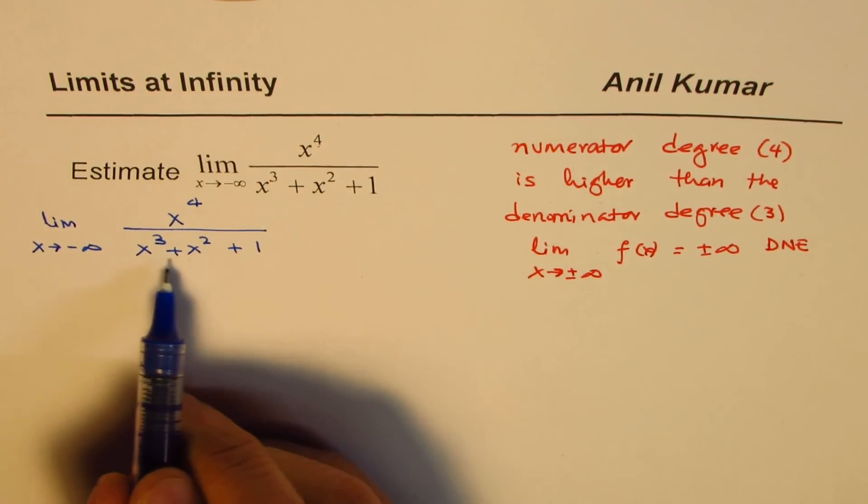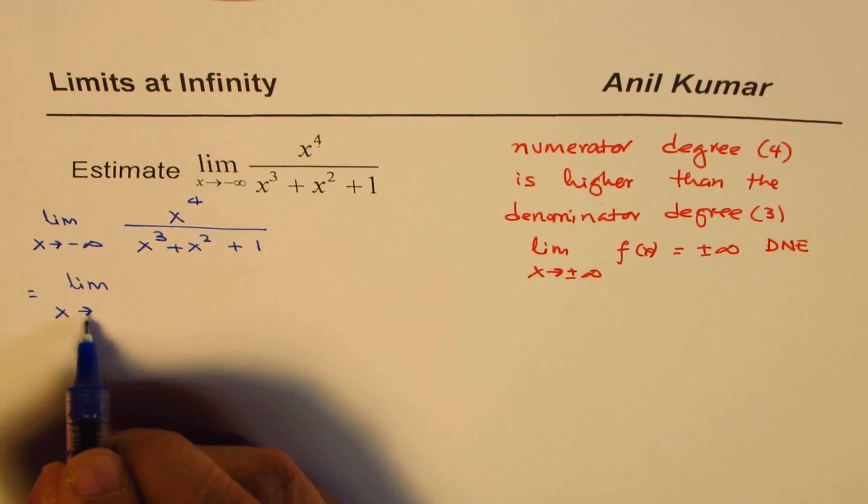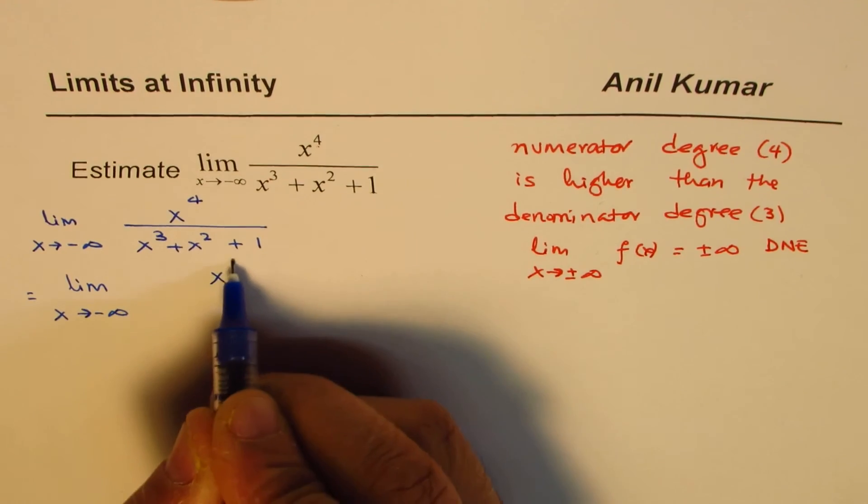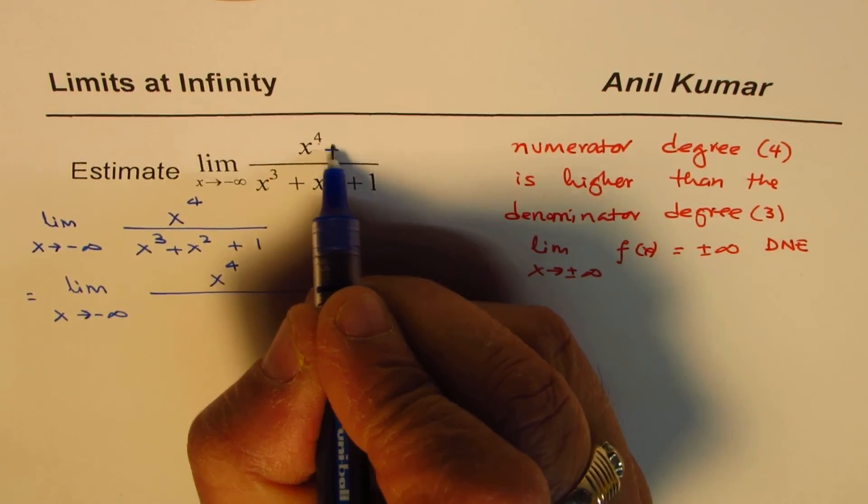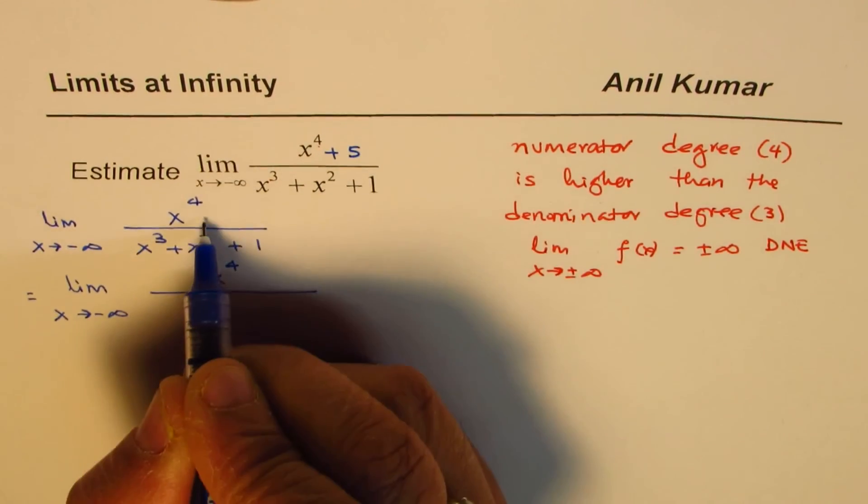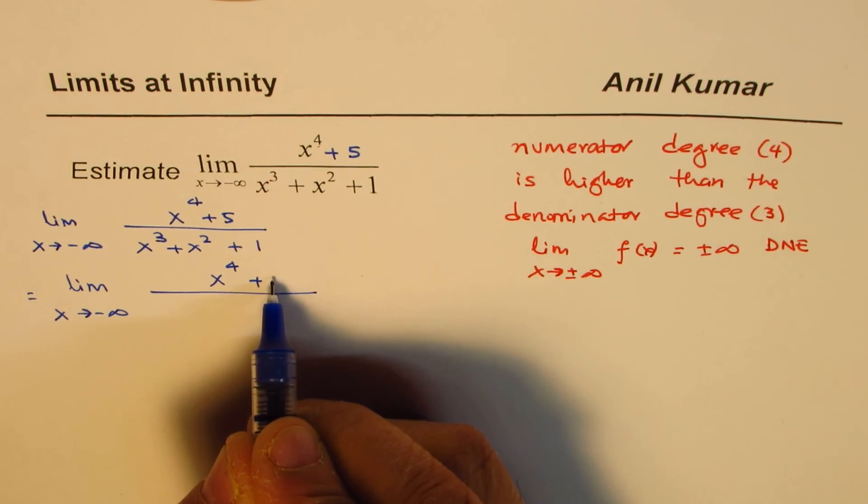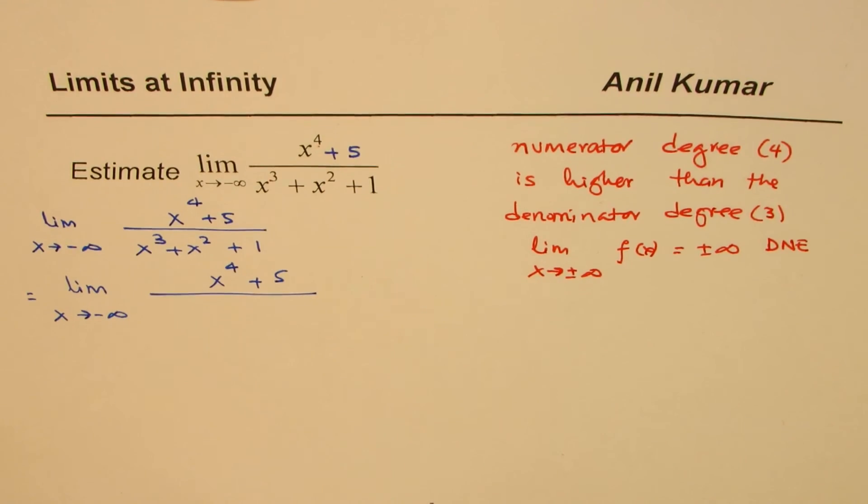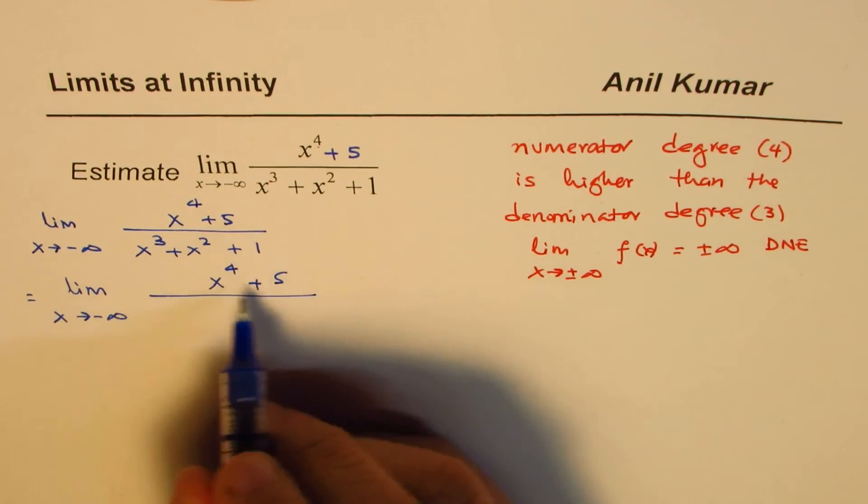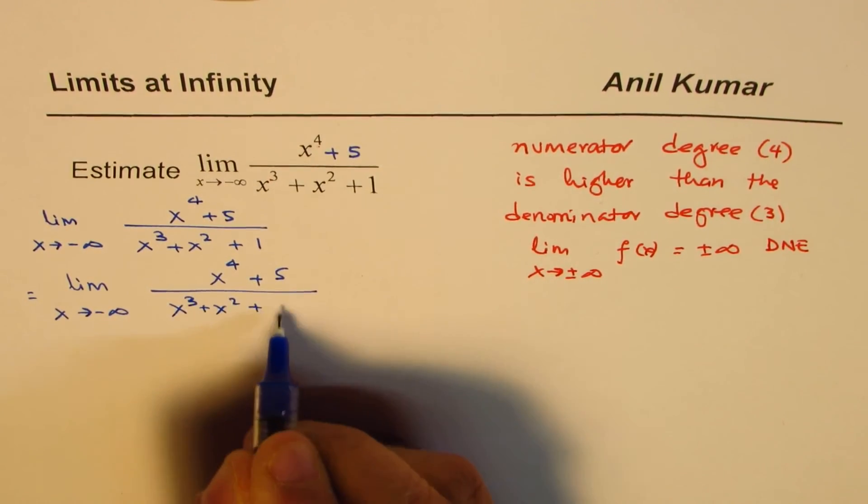Now in the denominator, we can take x cubed, so we can write this as limit x approaches minus infinity, we have x to the power of 4 over, well, I could have changed this question and written, for example, some number. Let me write this. It helps to explain my method better. So I just changed this a bit. It doesn't really matter, but it will help me to explain the method. Okay. So the denominator is x cubed plus x squared plus 1.